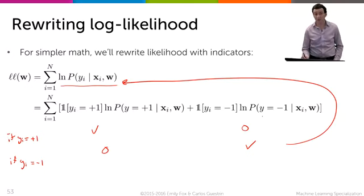Here's an interesting thing. So far we've only talked about the probability of y equals plus one, but in this equation we have the probability of y equals minus one. Interesting.